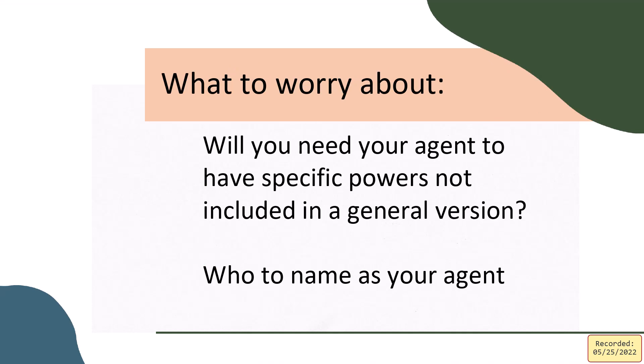What to worry about with POA: if you have special powers you need your agent to have — like the ability to gift more than the federal gift tax exclusion amount, to disclaim an inheritance, revoke a community property agreement, or handle Medicaid planning for long-term care — those specific powers may not be included automatically. A few powers do have to be specifically added. If those situations apply to you, it might be a good idea to have a lawyer write your power of attorney.